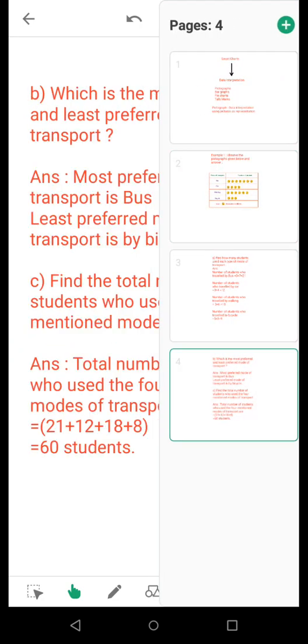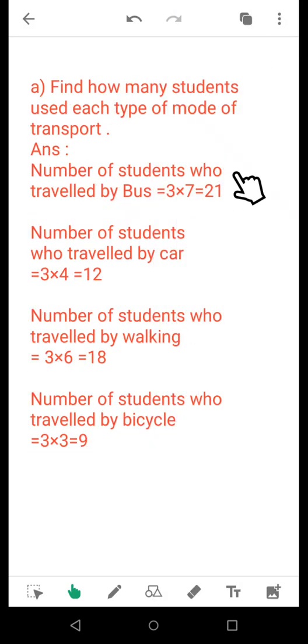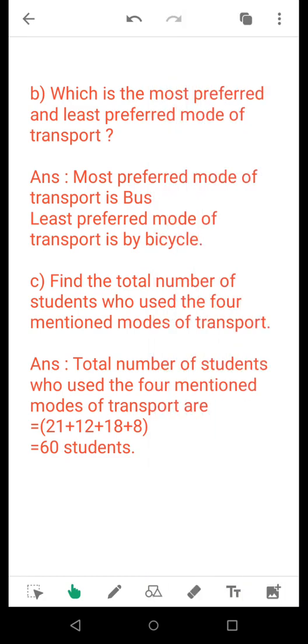Now, final question is finding out the total number of students who use the four modes of transport. That is the number of students that were surveyed to find out the entire result. What you need to do, you have already calculated them for different modes of transport: 21 for bus, 12 for car, 18 for walking and 9 for bicycle. After coming over here, simply add these values up, you will get 60.